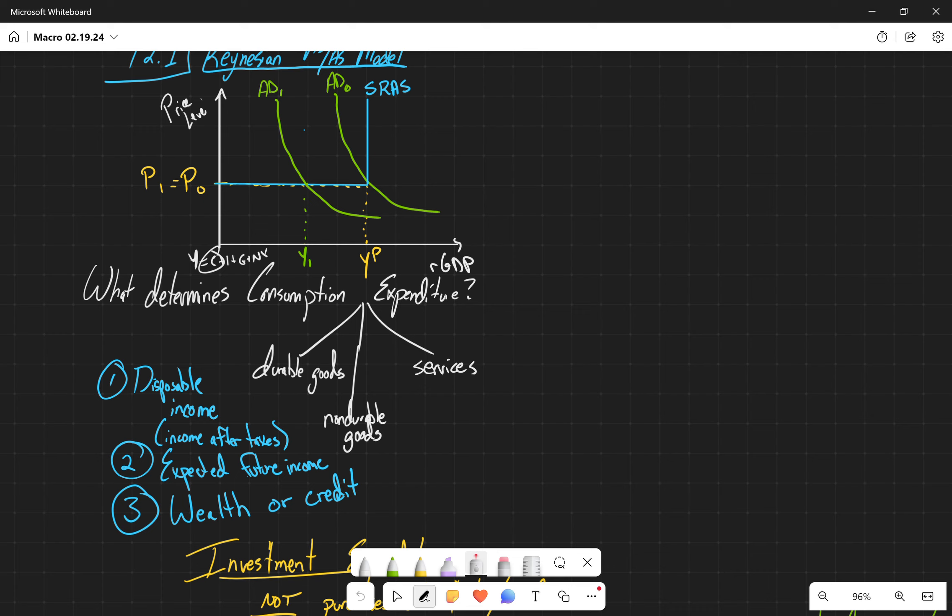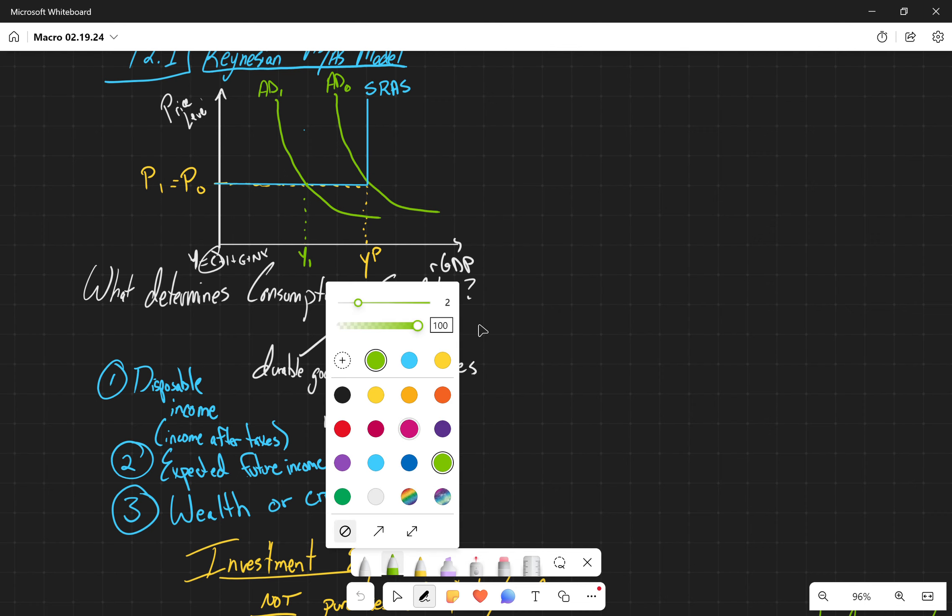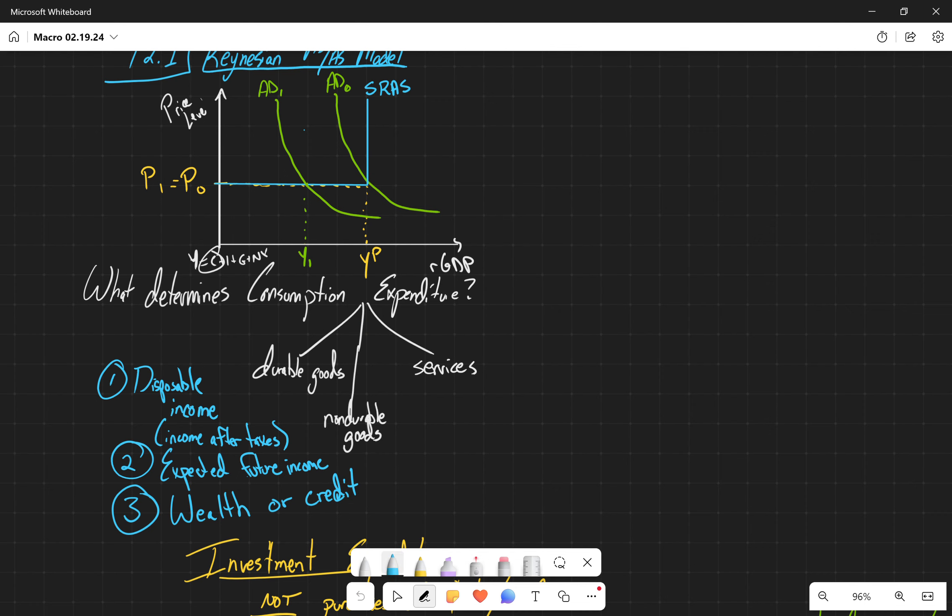Then we talked about what determines this aggregate demand. We started talking about consumption, how consumption is split into durable, non-durable goods, and services. The determinants of consumption are the disposable income - how much income people have after taxes - the expected future income, what they expect their wealth to be, and then what their wealth and/or credit is right now.